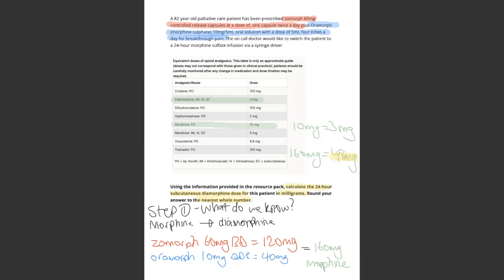Step one: Zomorph 60 milligrams times twice a day equals 120. Oramorph 10 milligrams four times a day equals 40. 120 plus 40 is 160.